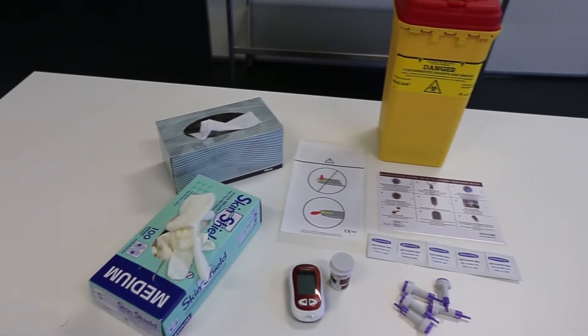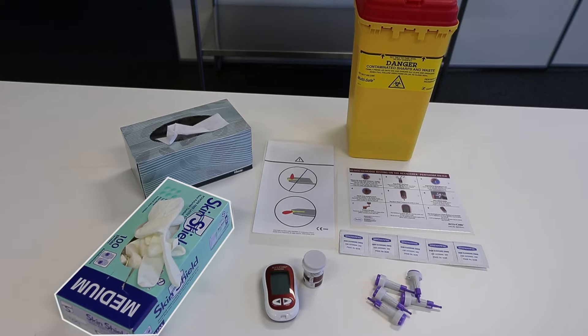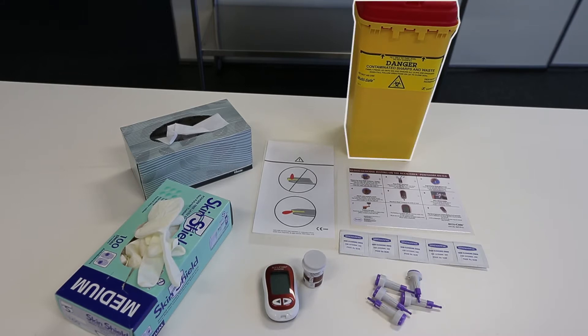The equipment you will find at the station for taking blood glucose are gloves, tissues, a set of instructions, some alcohol swabs, the blood glucose meters, lancets, and the sharps bin.